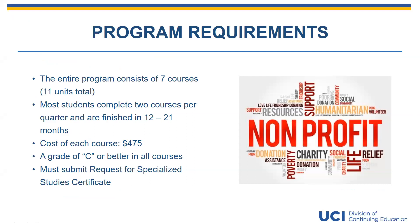The program consists of seven required courses for a total of 11 units. A certificate is awarded upon successful completion of all program requirements. Students must earn a letter grade of C or better in each course to be eligible for the certificate, and all requirements must be completed within five years after the student enrolls in their first course.